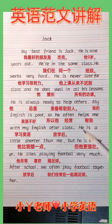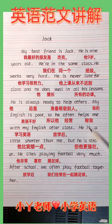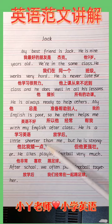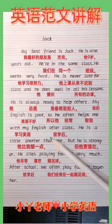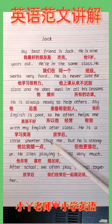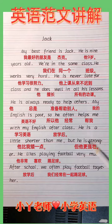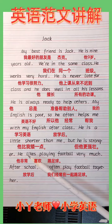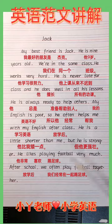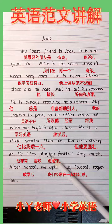He is a little shorter than me. 这里出现了 'shorter'，是比较级的标志词，表示比我要矮一点。But he is stronger，但是他却比我强壮，也用了比较级。He likes playing football very much. 'Like' 后面遇到动词时，我们可以用动名词形式来体现。